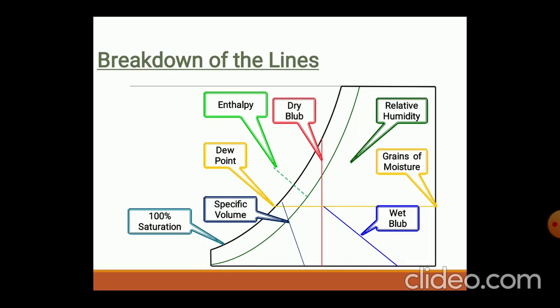The blue box represents wet bulb temperature. So whatever was discussed in the last lecture about the various properties of steam, water vapors, and particles in the psychrometric chart is now represented clearly. The lines indicate: dry bulb temperature, enthalpy lines, dew point temperature lines, specific volume lines, 100% saturation line, relative humidity, grain of moisture, and wet bulb temperature. All these parameters are represented on the psychrometric chart.